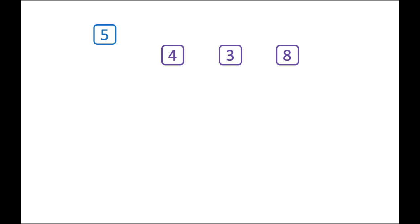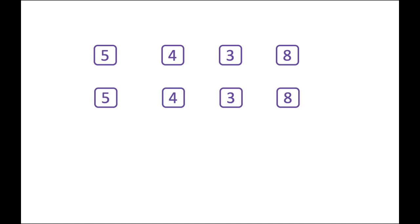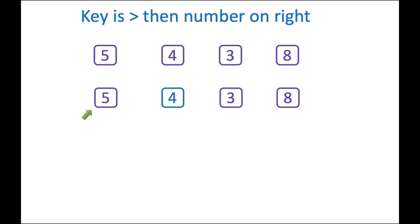Since we have a list of four numbers — five, four, three, eight — we'll start with the very first number, five, and pick that as the key. So the key is currently five. We pick that number and compare it to the very next number on the right. Since the key, five, is greater than the number on the right, which is four, what we have to do is swap.